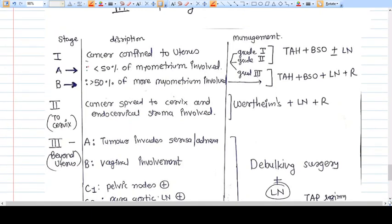So stage 1: stage 1 means the cancer is confined to the uterus. Now it has two different substages, 1a and 1b. 1a means less than 50 percent of myometrium is involved. 1b means more than 50 percent of the myometrium is involved.